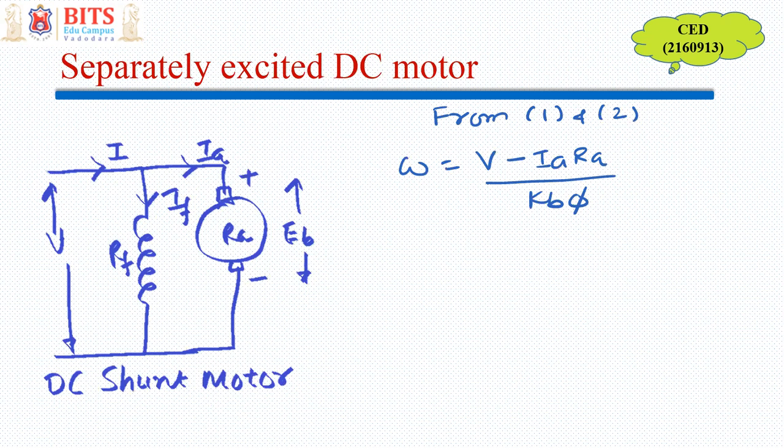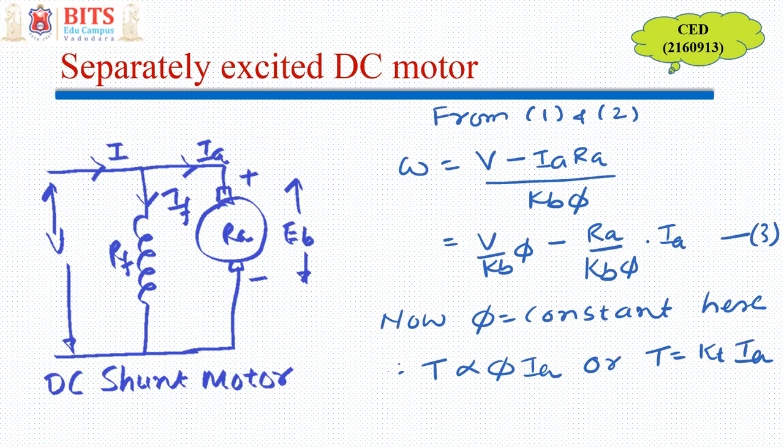We can see that speed is given by these two terms. And if I replace this current by torque, ultimately I get speed relation in terms of voltage and torque. So if I assume voltage is constant, flux is constant. So speed versus torque relation is described by equation 4.